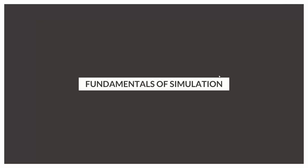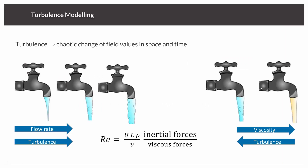Now let's talk about some further CFD fundamentals. Last week we introduced computational fluid dynamics and its use for green building projects. Today, let's focus on aspects important for simulating internal air flows and thermal comfort. The first topic is turbulence modeling. Turbulence is basically nothing more or less than a chaotic change of field values in space and time. A lot of people have a misconception that vortices and turbulence are the same, but that's not actually true.